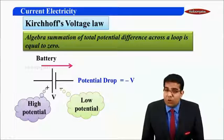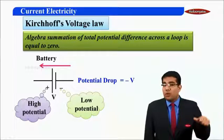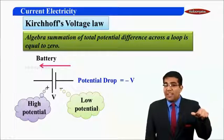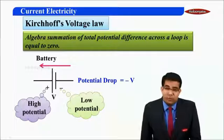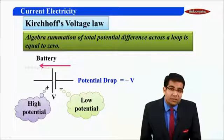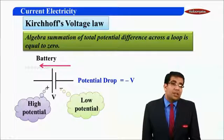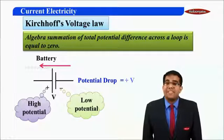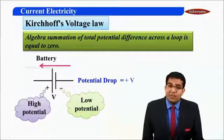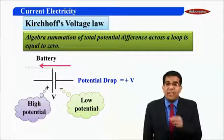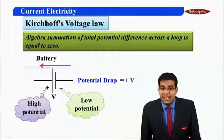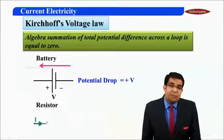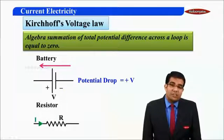Now, what will happen if I move from the negative terminal of the battery towards the positive terminal? Obviously, the potential drop will be plus V, because moving from low to high I will gain something. Let us now understand the potential drop across a resistor.